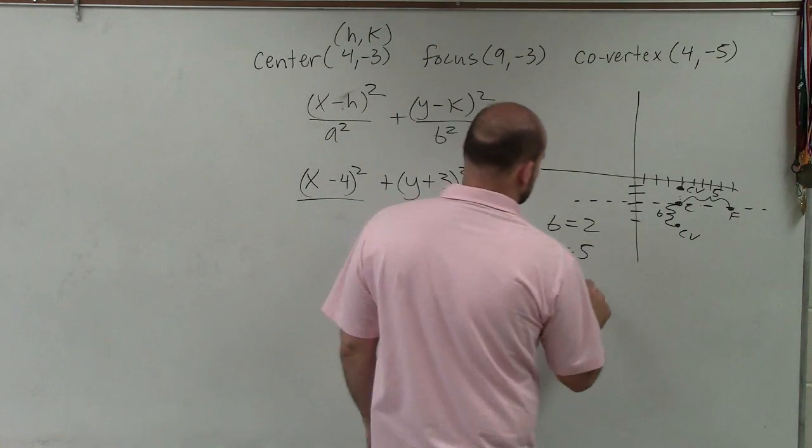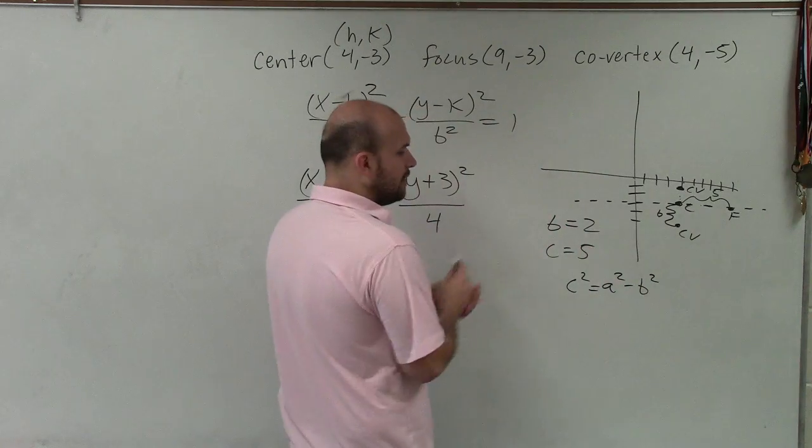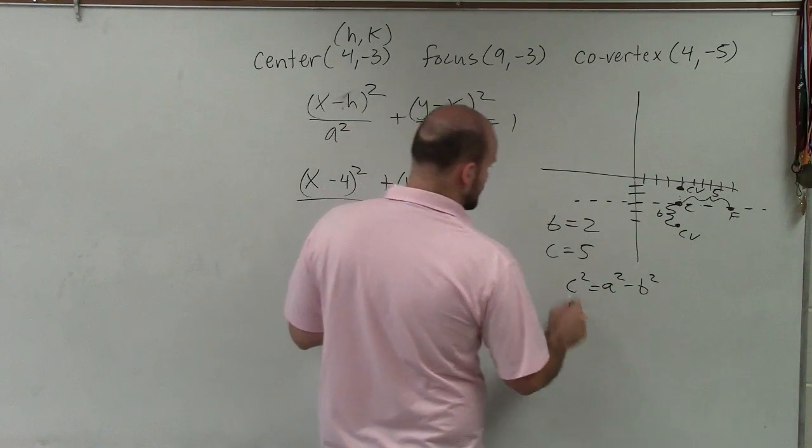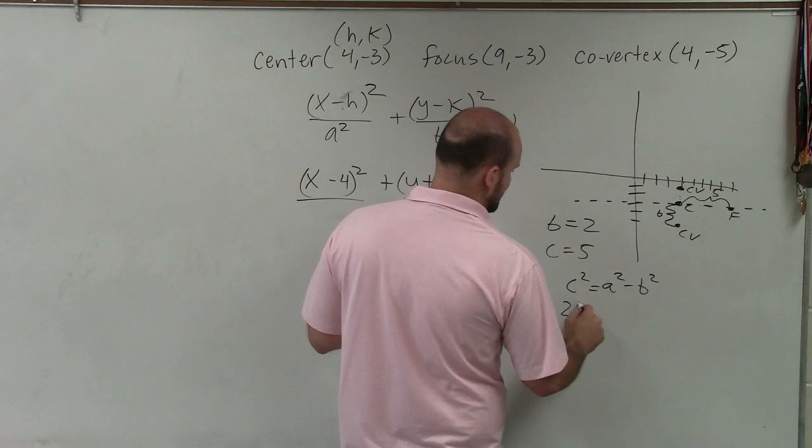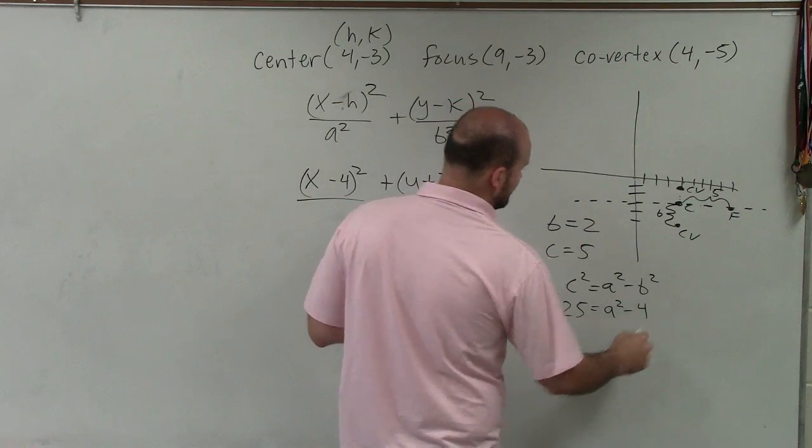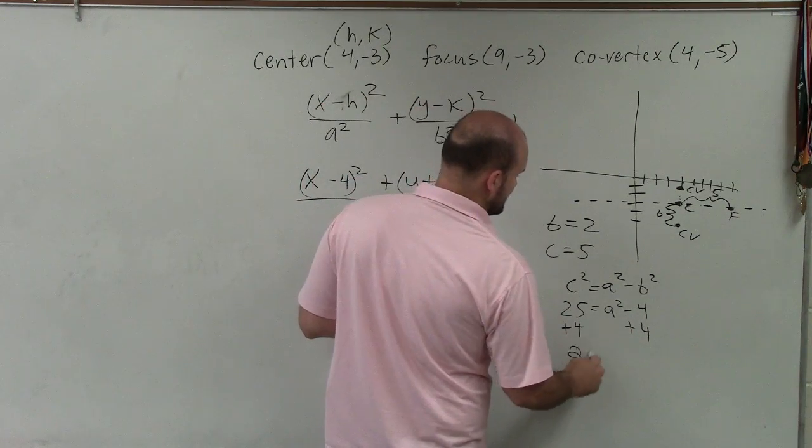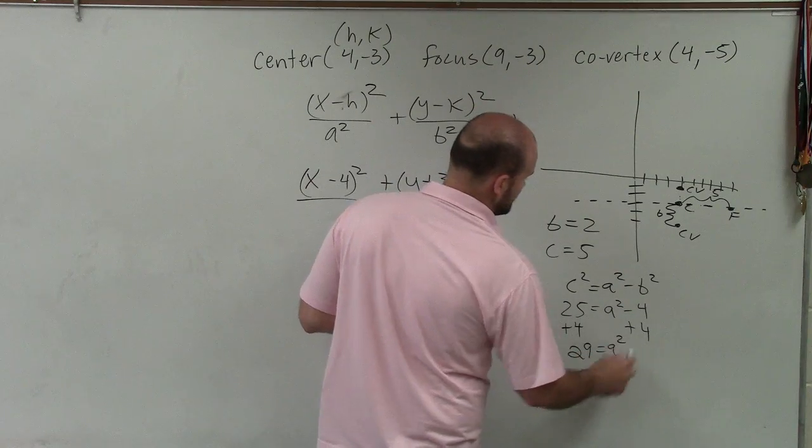So the relationship is c squared equals a squared minus b squared. So now, all I simply need to do is enter in the information I know, which is c, so that's 25, equals a squared minus 4. Now, I'll just go ahead and solve for a squared. So I'll add 4 to both sides. And I have 29 equals a squared.